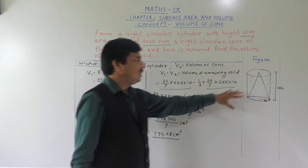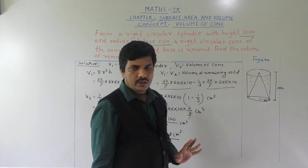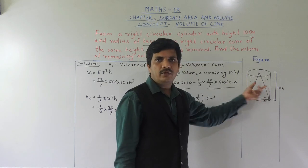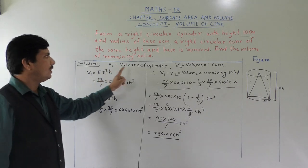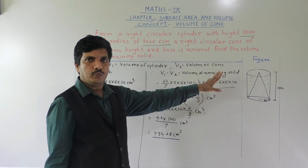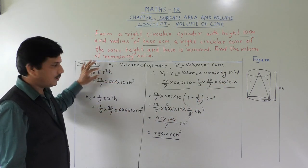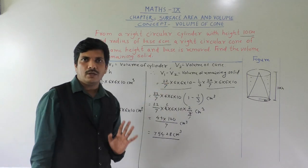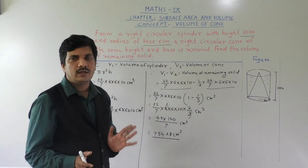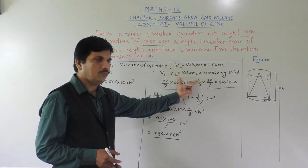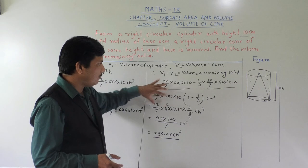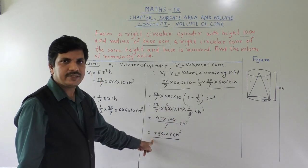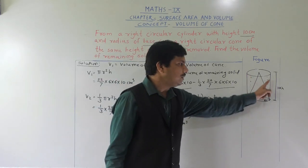To summarize: there is a cylinder and a cone whose height and base are the same. When the cone is removed from the cylinder, we find V1 as volume of cylinder using π R² H, and V2 as volume of cone using 1/3 π R² H. Subtracting V1 minus V2, taking common factors outside gives 1 minus 1/3 equals 2/3. Solving gives 754.28 centimeter cube as the volume of remaining solid.